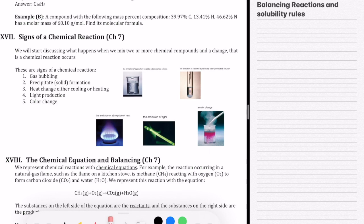Hi, everyone. Let's get started talking about Chapter 7. In this chapter, we're going to talk about all types of chemical reactions. We're going to start by talking about the signs of a chemical reaction.